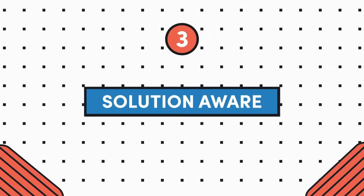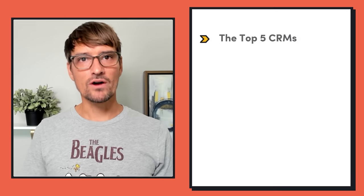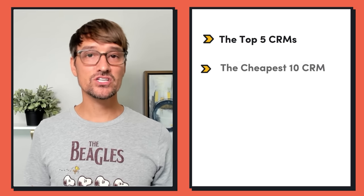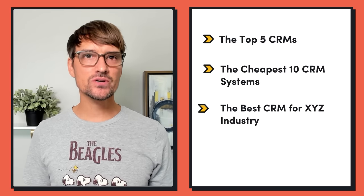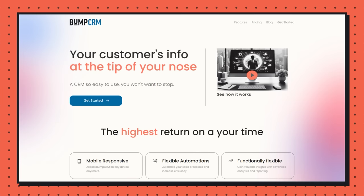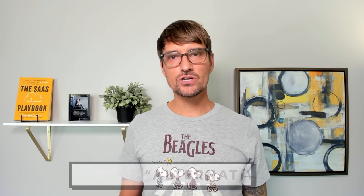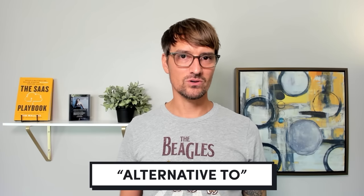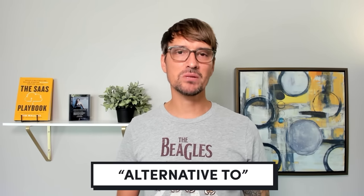The next level is solution aware. Solution aware content is for people who know that there is software out there that could solve their problem. So you might create content around what are the top five CRMs, what are the cheapest ten CRM systems, or what's the best CRM for a specific industry. You would of course include Bump as one of the items in these lists, or mention it at the top or bottom and get email opt-ins. There's also alternative-to types of articles, which I'll explain in a minute.